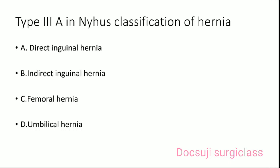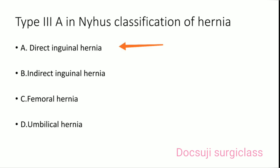Type 3A in Nyhus classification of hernia. A. Direct inguinal hernia. B. Indirect inguinal hernia. C. Femoral hernia. D. Umbilical hernia.